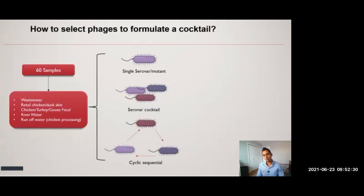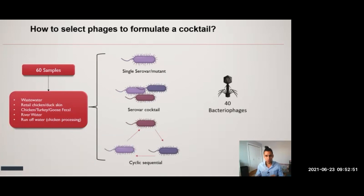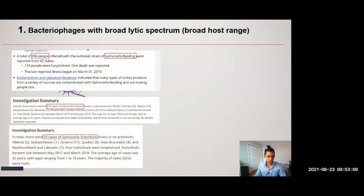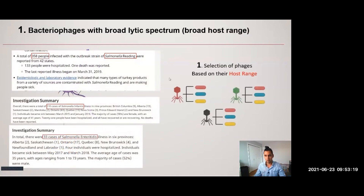Isolating phages against Salmonella is a relatively simple task, but isolating the right bacteriophage is not. We screened approximately 60 different samples and isolated around 40 bacteriophages against Salmonella. We used different methods to screen and select the most suitable phages, and our number one criteria is to isolate phages with a broad host range. This is because Salmonella enterica has more than 1,600 different serovars, which are often associated with outbreaks in poultry and other food products, so we need a phage cocktail that can target multiple serovars.